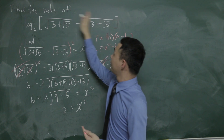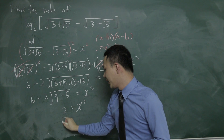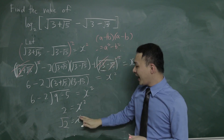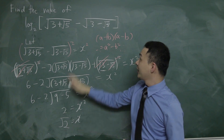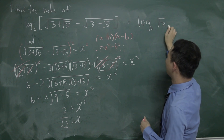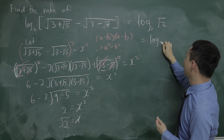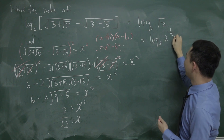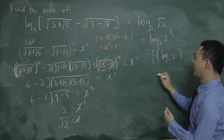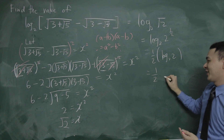Since x² = 2, we get x = √2. Substituting back, the original expression is log base 2 of √2. Since √2 = 2^(1/2), the power rule of logarithms lets us move the exponent to the front: (1/2)·log₂2 = (1/2)·1 = 1/2. So the answer is 1/2.